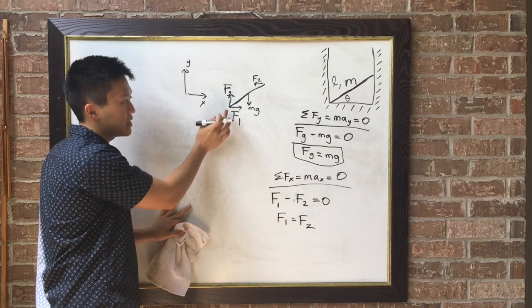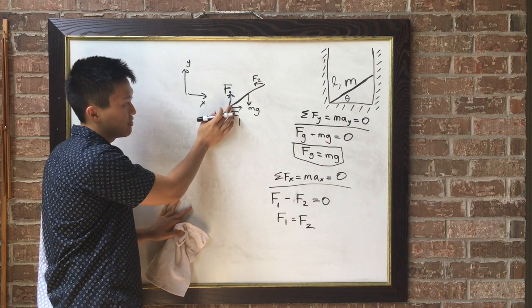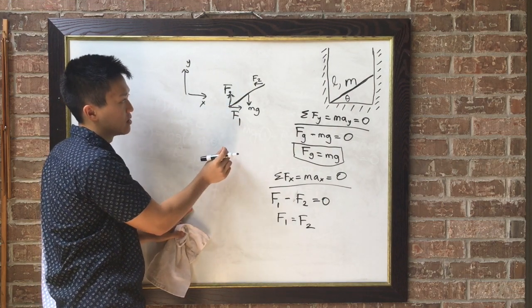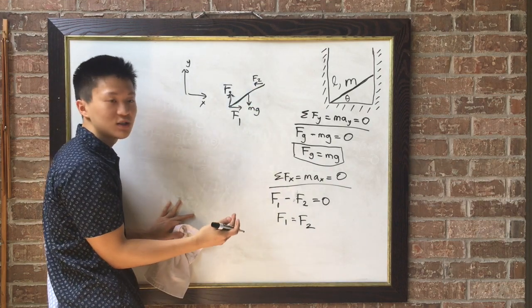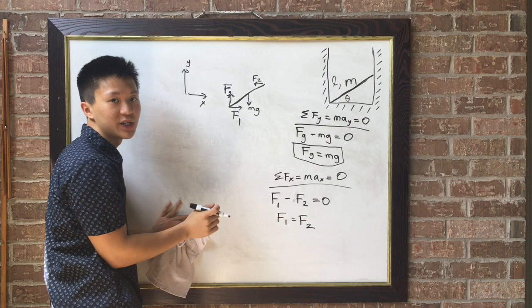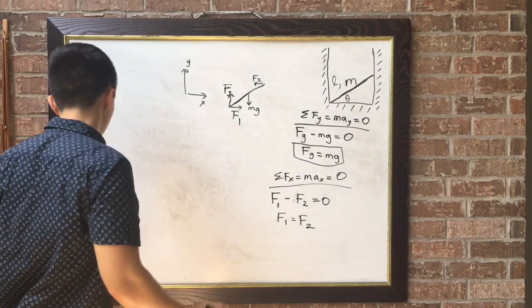So by examining torques about this left end, I can solve for F sub 2 since the only forces causing torques are F sub 2 and mg. So let me write that out.